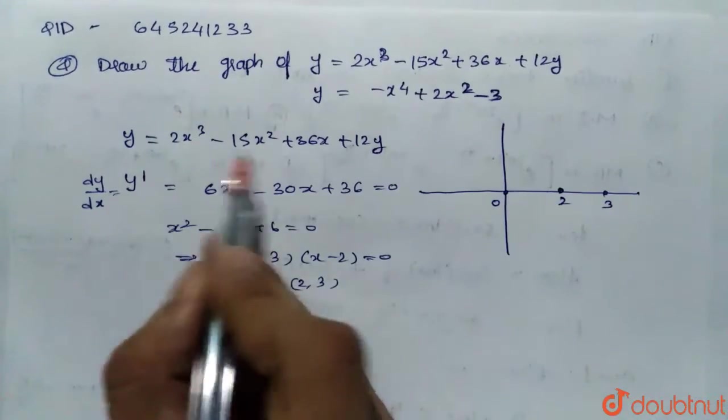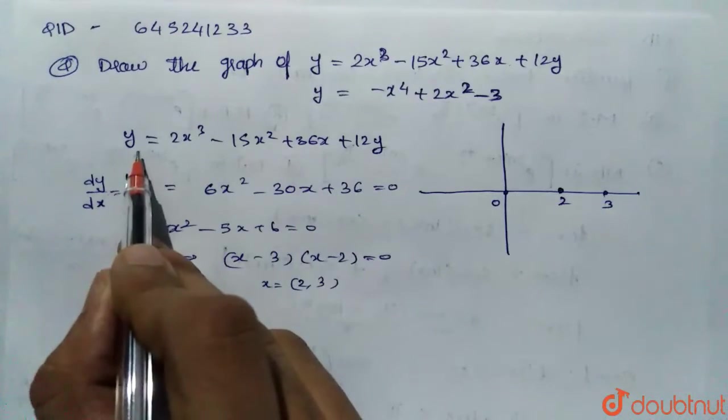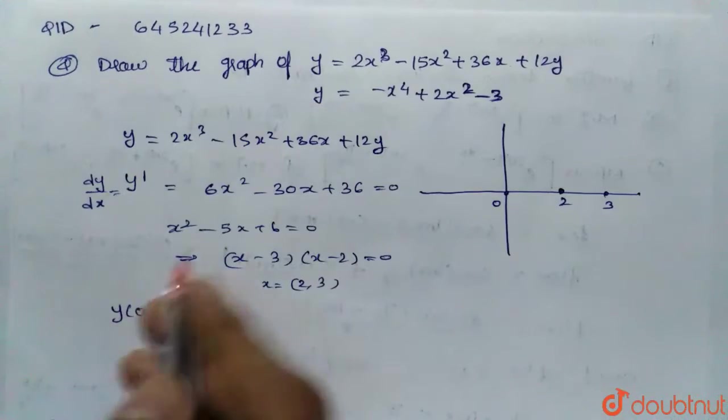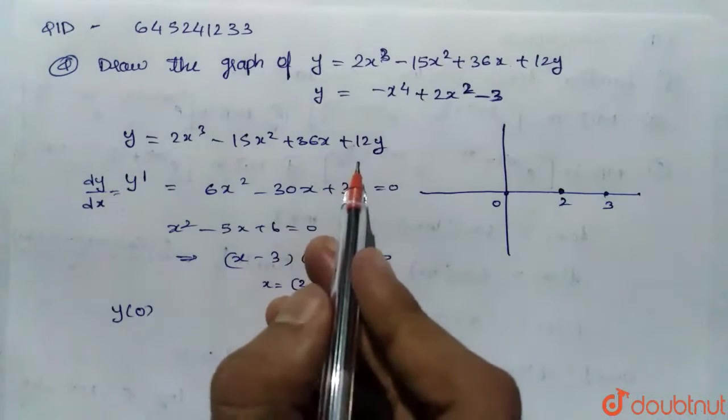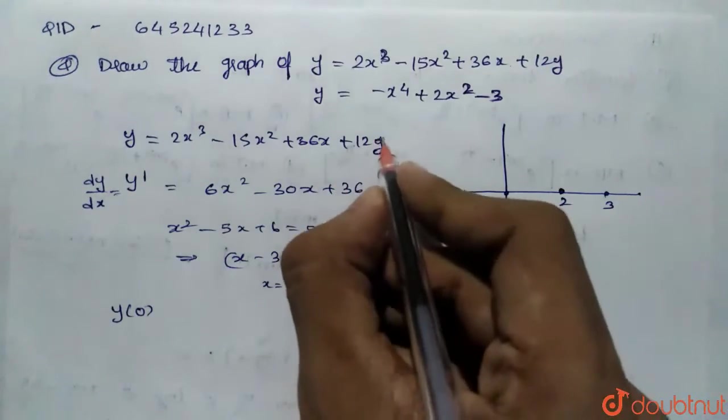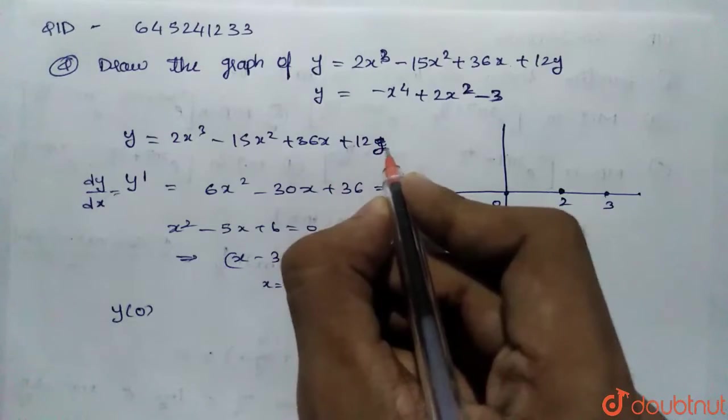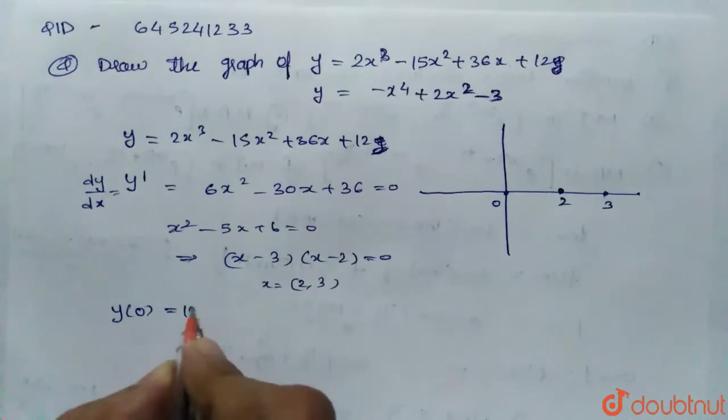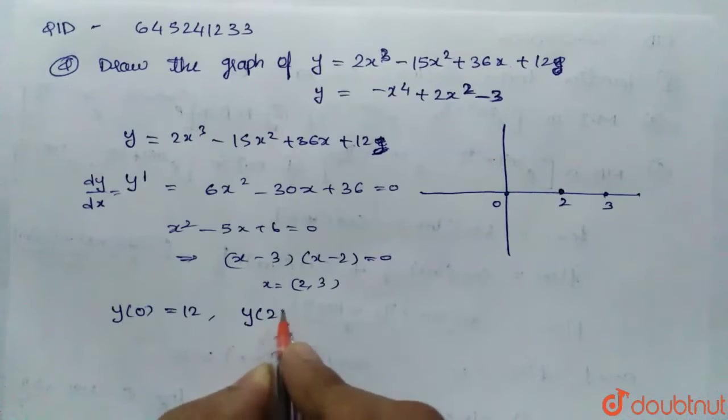Let's find the value of this equation, y value at different points. So, y at 0, if we substitute 0, this is actually 12. If we substitute 2, y(2) would be 40.